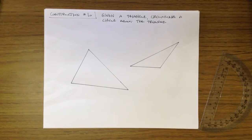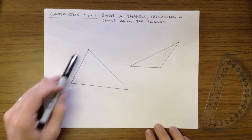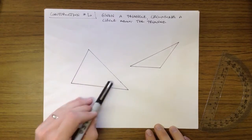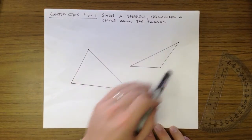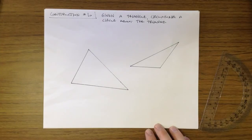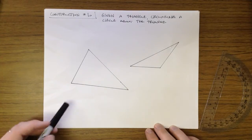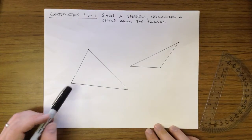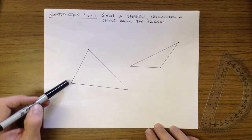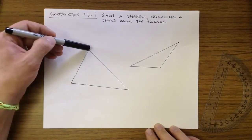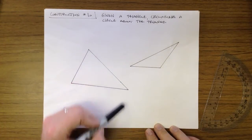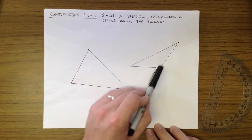This is construction number 10, and this one is one of my more favorite constructions because we're going to be taking these triangles and we're going to circumscribe a circle about the triangle. So what we're going to do is draw a circle that hits each endpoint of these triangles.